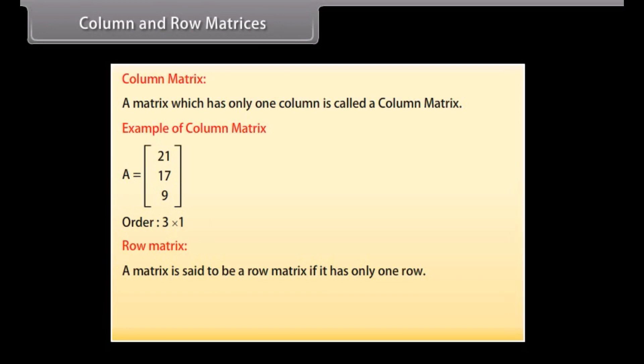Row matrix. A matrix is said to be a row matrix if it has only one row. For example, row wise, 3, 5, 1 is a row matrix as it has only one row.